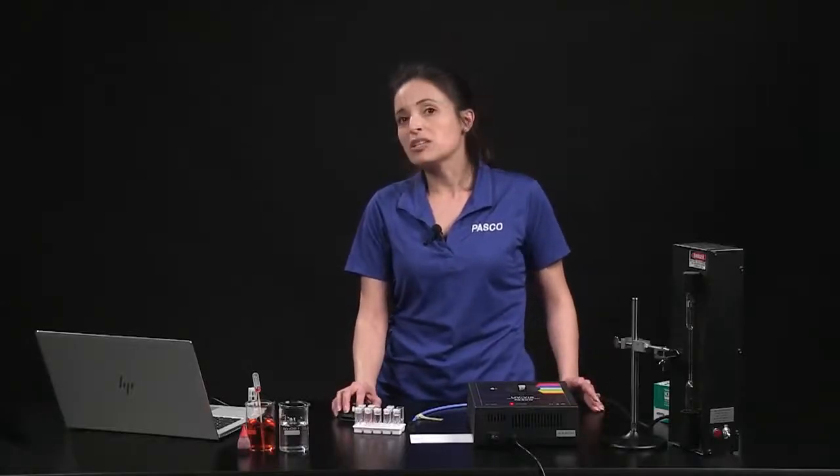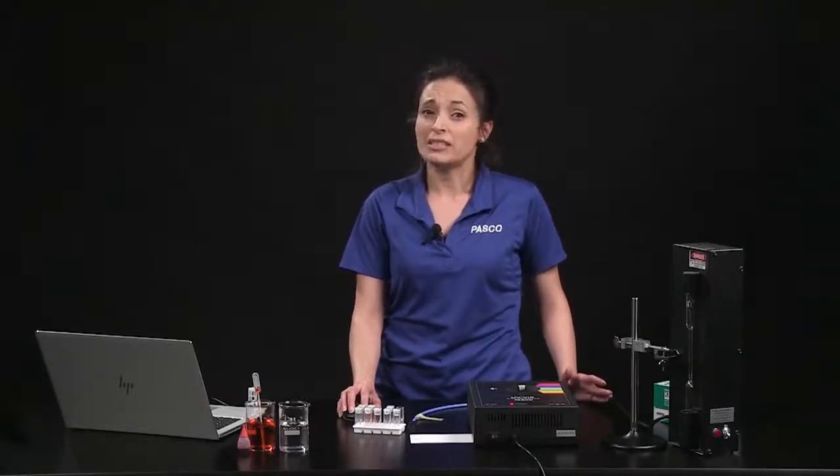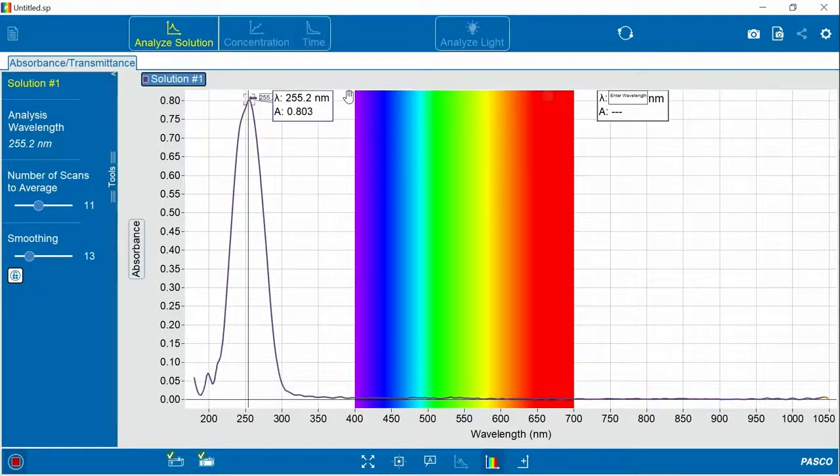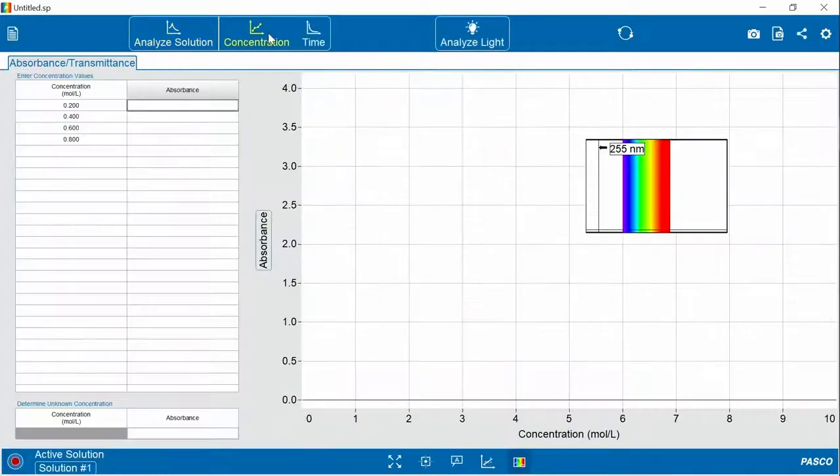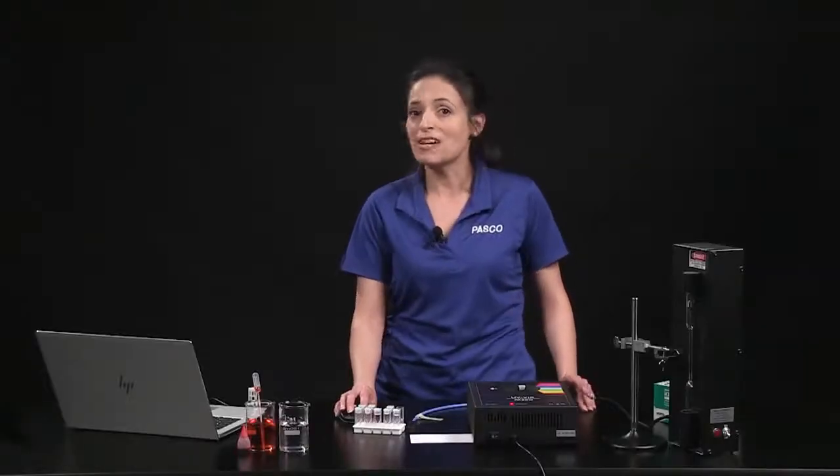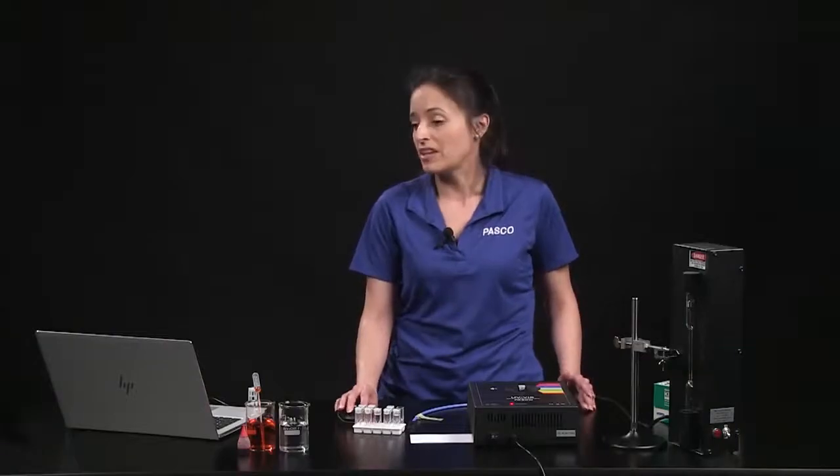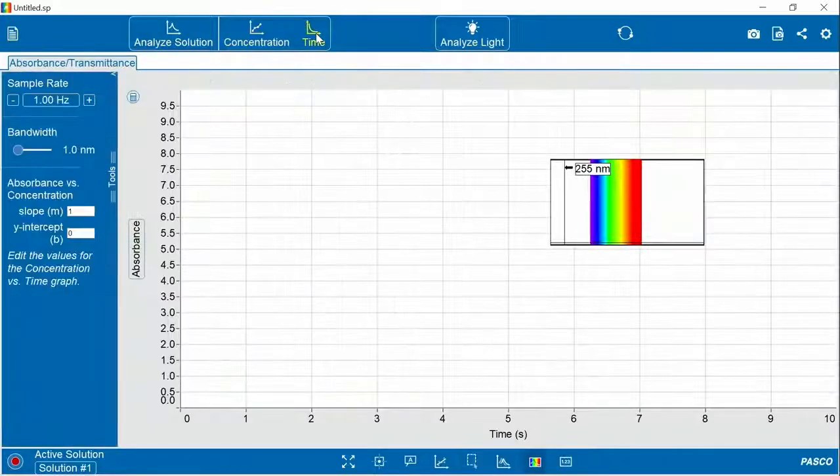I've just shown you one way to look at solutions. But you can complete a Beer's Law analysis to determine the unknown concentration of the solution if you keep your selected peak, stop collecting data, and move to the concentration tab. Or you can investigate factors that affect the rate of reaction, such as redox or hydrolysis reactions, when you move to the time tab.